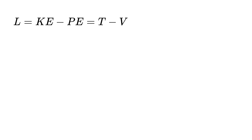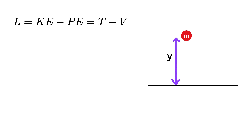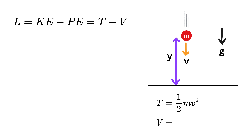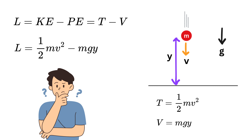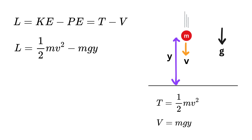It gives the same results but often in a simpler and more flexible way, making it very powerful for solving complex problems in physics and engineering. The Lagrangian uses just a single letter L, defined as the difference between the kinetic energy T and the potential energy V of the system. To understand it better, consider a point object of mass m at some height y in free fall, falling with velocity v and acceleration g downward.